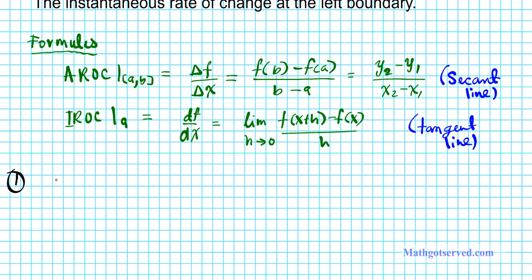We have the function f of x equals 2x squared plus 2x plus 1 on the interval 0 to 1 half. So the lower bound is a and the upper bound is b. So this is our a and this is our b.